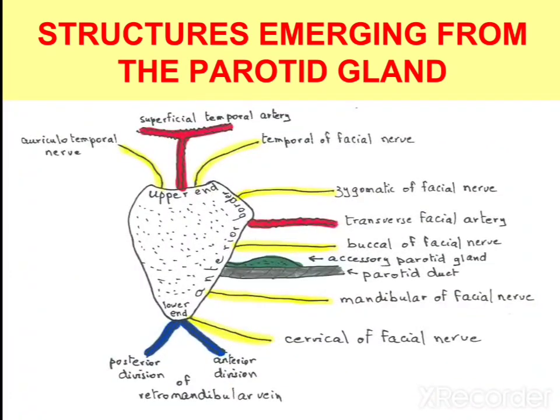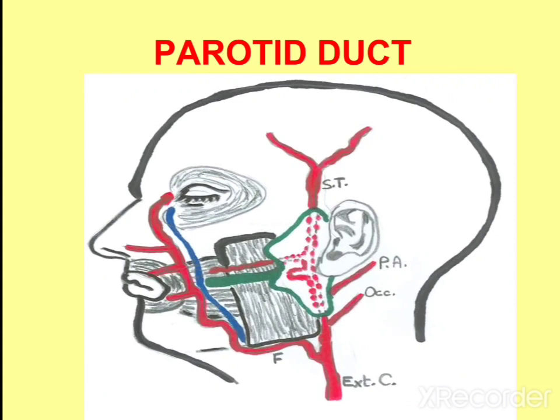The structures emerging from the parotid gland include the terminal branches of the facial nerve — that is, the temporal branch, zygomatic branch, buccal branch, mandibular branch, and cervical branch — as well as the terminal branches of the external carotid artery, that is the superficial temporal and transverse facial artery, and the divisions of the retromandibular vein, like the posterior division and the anterior division. Then there is the parotid duct.